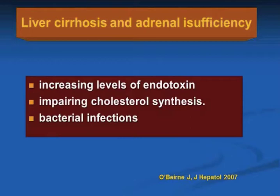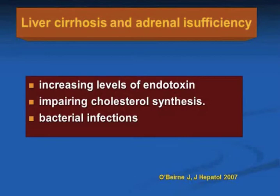Patients with liver cirrhosis have hemodynamic abnormalities but also a profile similar to patients with septic shock or adrenal insufficiency. Liver failure could contribute to adrenal insufficiency by increasing levels of endotoxin and impairing cholesterol synthesis. In addition, bacterial infections that occur frequently in patients with cirrhosis might be related to altered synthesis of adrenal cortisol.